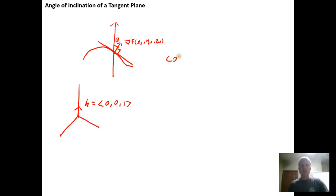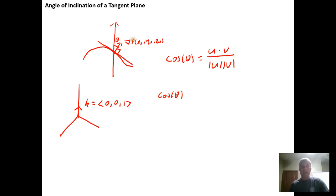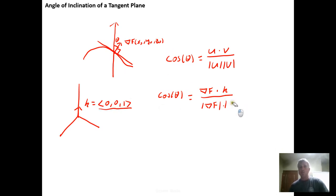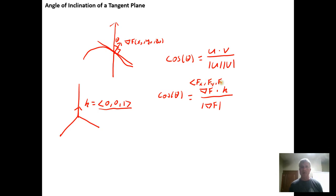If we can find the angle that the gradient vector makes with vector k, where k is the vector (0, 0, 1), then we know the angle the gradient vector makes with the z-axis, and thus the angle at which the tangent plane has been inclined. From previous work, we know that the cosine of the angle between any two vectors u and v is u dot v divided by the magnitude of u times the magnitude of v. In this case, u and v will be the gradient vector and the vector k.